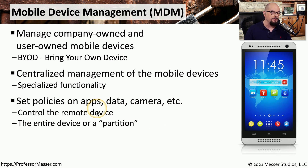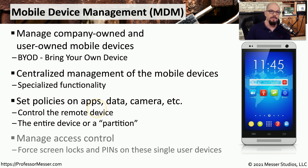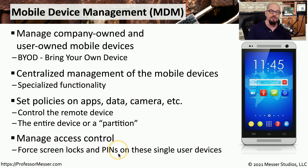For example, you can set policies based on applications that are in use, the type of data that's on the device and where the data is stored, if the camera is operational, and almost any other aspect of the functionality of those mobile devices. You can also specify a specific type of security in place — for example, screen locks and personal identification numbers to ensure that the device remains secure even when the user isn't around.